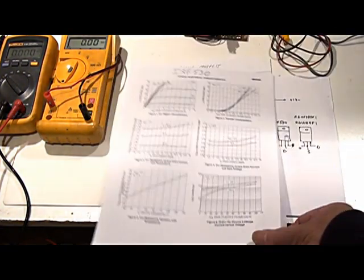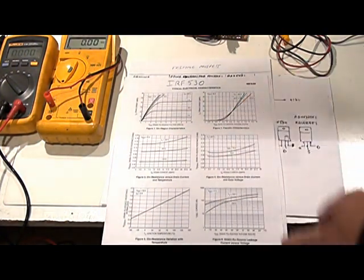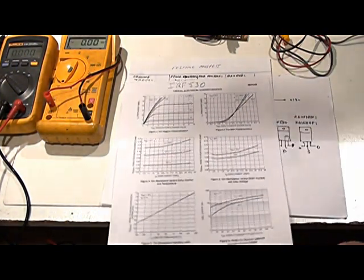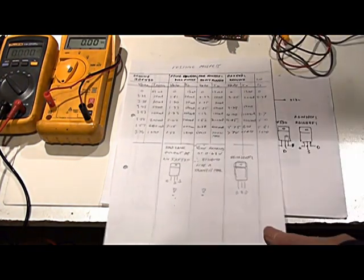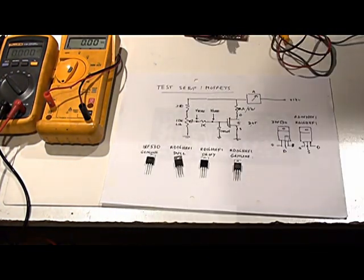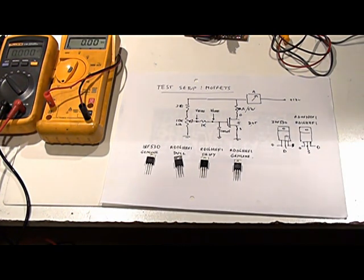Similarly with the IRF530. But the curve is different. So it's possible to determine whether you have an IRF530 or a genuine RD16. Apart from the fact the pins are the other way around.